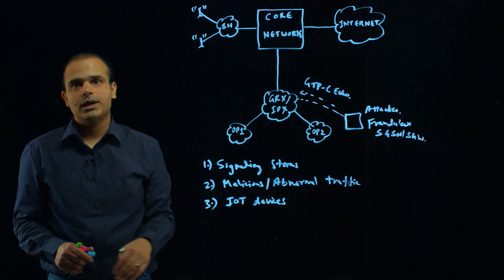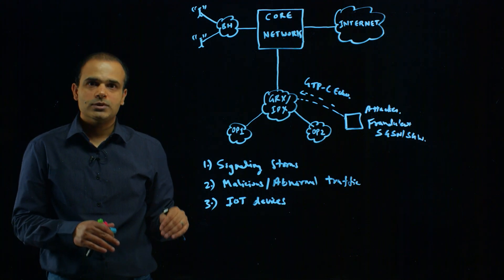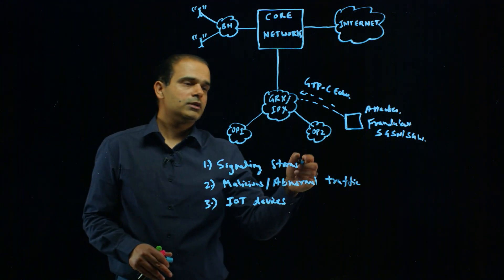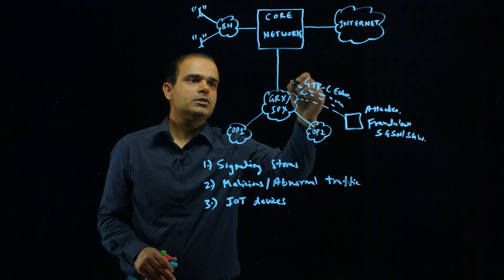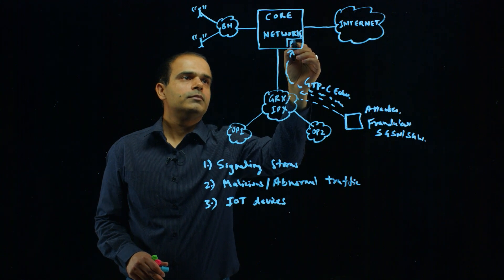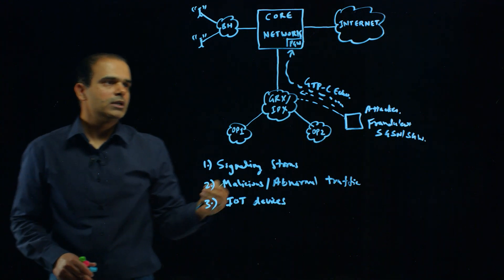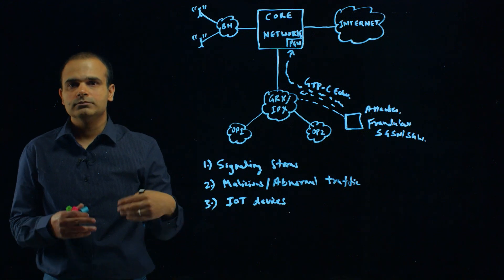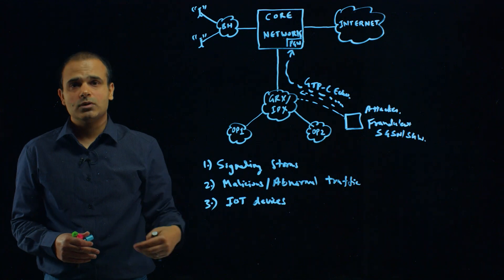Once the attacker has the IP details of these network nodes which support GTP protocol, the attacker can create fraudulent abnormal traffic and launch this attack on, say, the packet gateway of your network. The packet gateway is going to have issues in giving service because this is all abnormal traffic.